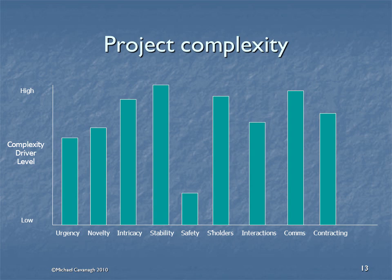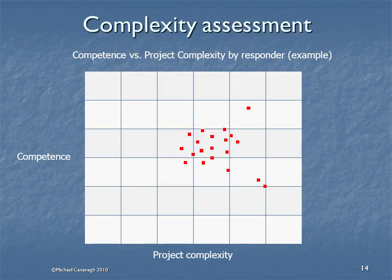We then produce a scatter plot of competence versus complexity by responder. This scatter plot gives us an idea of the level of consensus, and it also positions us on a project complexity matrix.